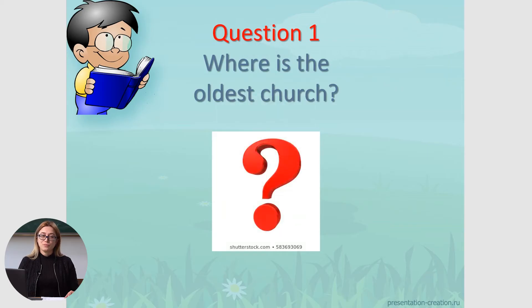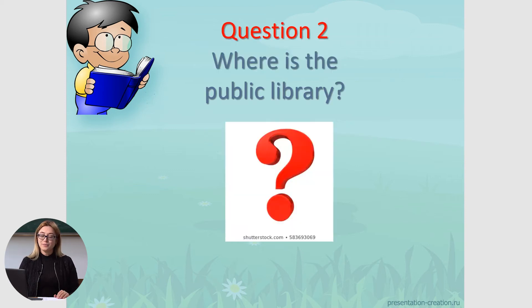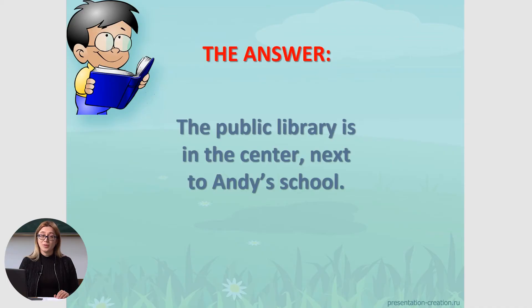First question: where is the oldest church? Take time to think. The oldest church is on Stefan Chalmary Street. Second question: where is the public library? Look through the text and find the answer. The public library is in the center, next to Andy's school.